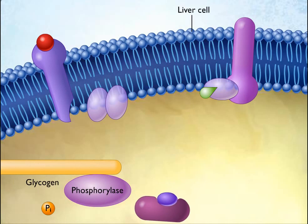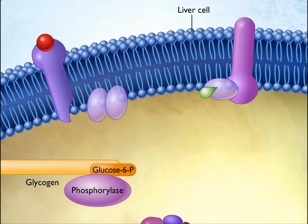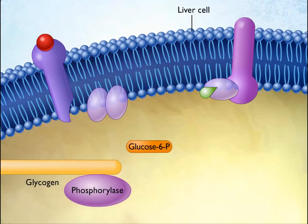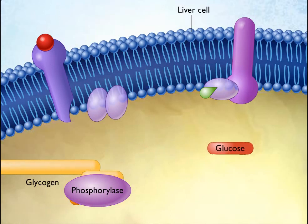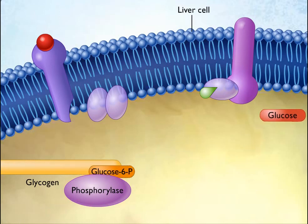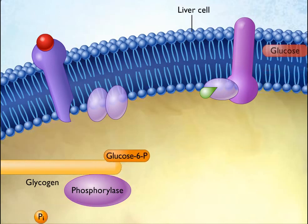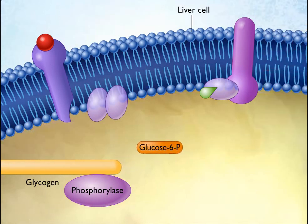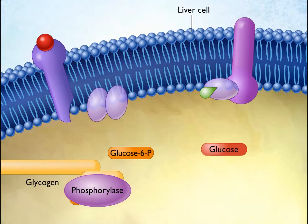The glucose-6-phosphate is then converted to glucose. Through this multi-step mechanism, epinephrine causes the liver to secrete glucose into the blood during the fight-or-flight reaction.